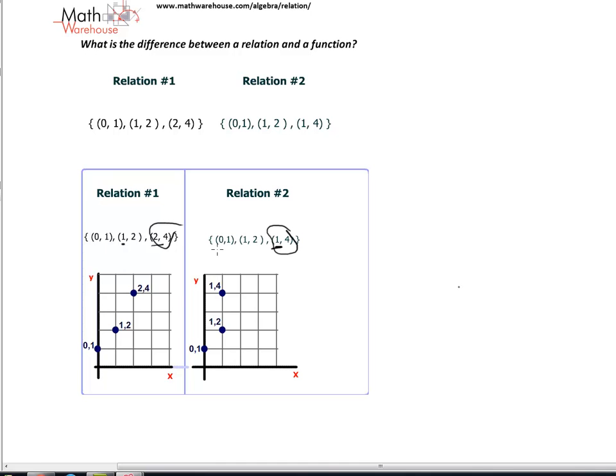However, over here, things start out - the x value of 0 has a y value of 1. The x value of 1 has a y value of 2. Everything is looking okay until we get to these last two. Here we have an x value of 1 with a y of 2 and an x value of 1 with a y of 4. As you can see, these are our two trouble points.